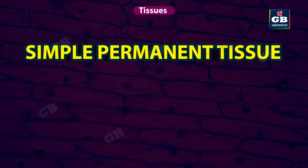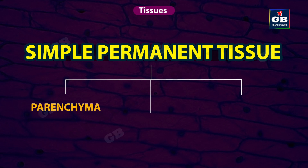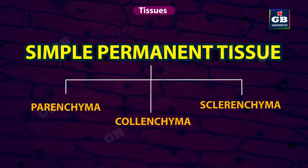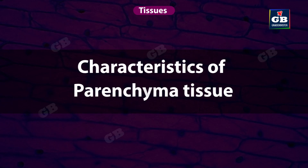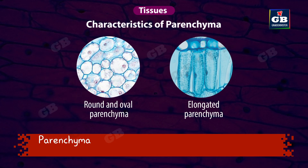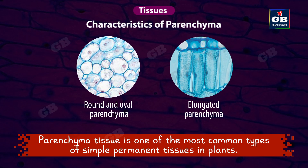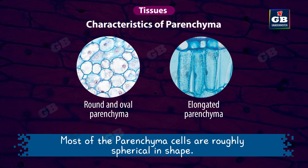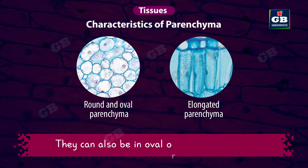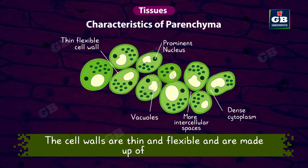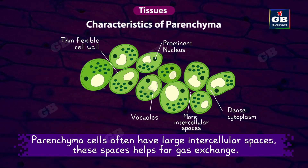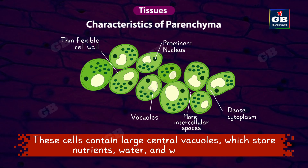Simple permanent tissue is of three types: parenchyma, colenchyma, and sclerenchyma. Parenchyma tissue is one of the most common types of simple permanent tissues in plants. Most parenchyma cells are roughly spherical in shape, though they can also be oval or elongated. The cell walls are thin and flexible and are made up of cellulose. Parenchyma cells often have large intercellular spaces, which help for gas exchange. These cells contain large central vacuoles which store nutrients, water, and waste products.